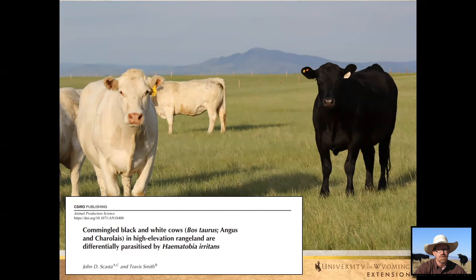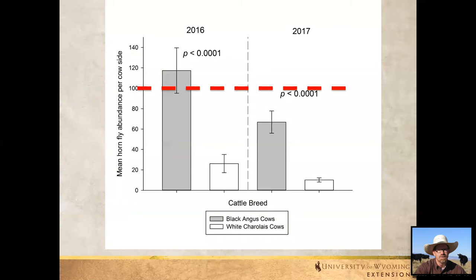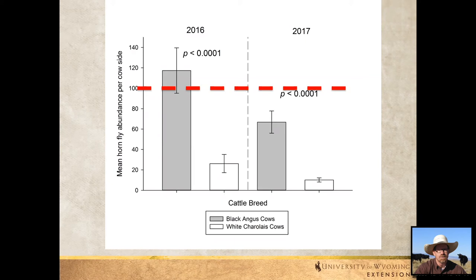We studied commingled white Charolais and black Angus cows in high-elevation rangeland near Laramie, finding they are differentially parasitized by horn flies. In both 2016 and 2017, black Angus cows always had average horn fly infestations much higher than the white Charolais cows — always a significant difference. In 2016, the black cows exceeded the economic threshold. In a cold, high-elevation environment, those black animals may present a warmer surface environment that flies prefer. So if you've got mixed-color yearlings, you may only need to treat the black cattle in our environment.